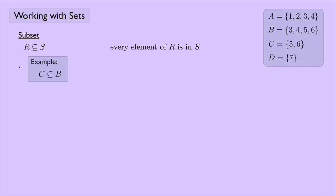For an example using the sets that I have here, A, B, C, and D, we see that every element of C is in B. C is a subset of B and you can see that here five and six, those are both elements of B.